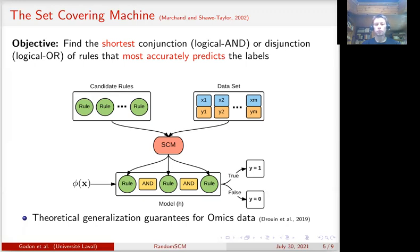A set covering machine model can be seen as a decision tree restricted to only one branch. Note that it is a very sparse model. Theoretical results rely on this sparsity to guarantee that it does not overfit.